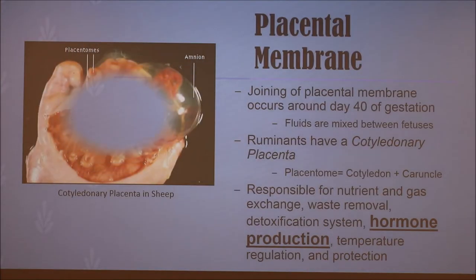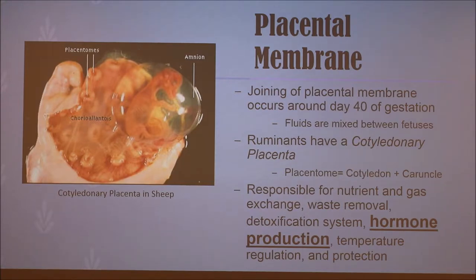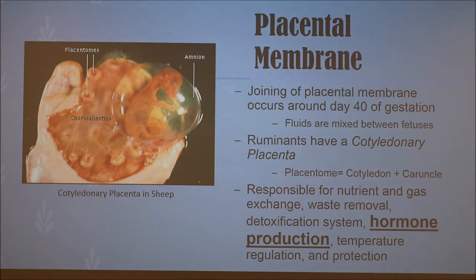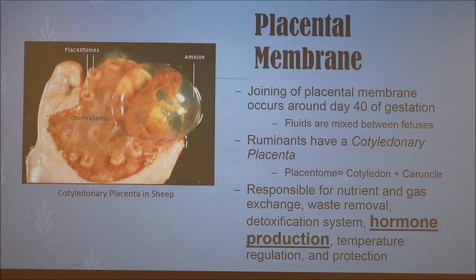Next we're going to talk about the placental membrane connection, which is the real problem that causes the heifer to be infertile. They share the same placental membrane, which would not be the case with a litter-bearing species such as pigs, because each piglet would have its own amniotic sac. In cattle, the joining of the membrane between the two fetuses occurs around day 40 of gestation, after which fluids are exchanged and mixed between the two calves. In ruminants, they have a cotyledonary placenta, so there are numerous points of contact between the maternal and fetal vascular sides.